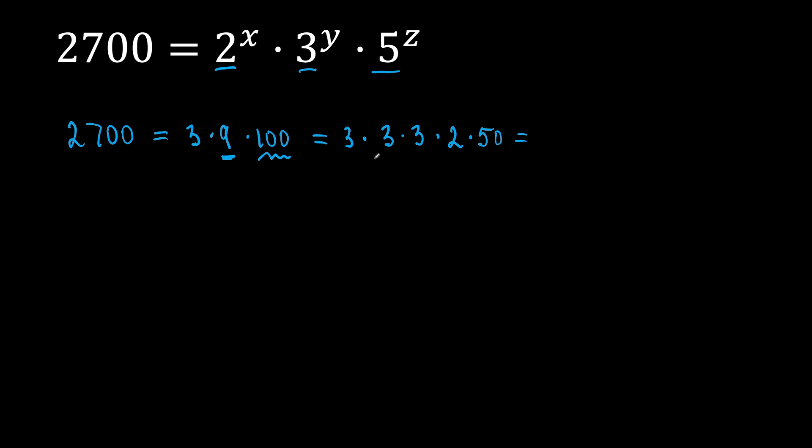Very good! You see, we have things going on here. 3 times 3 times 3 means 3 to the power of 3. Let's work on 50. So, times 2 times 50 means 2 times 25. Very good! Now, let's keep going.